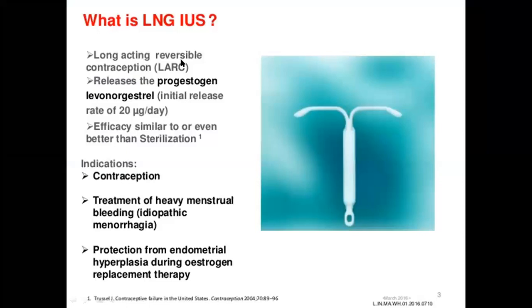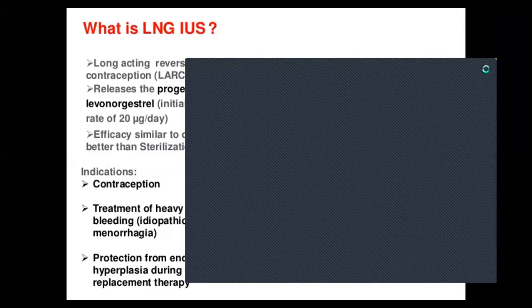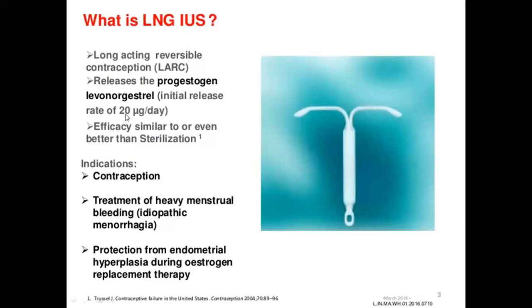Mirena is also known as LARC — long-acting reversible contraception. It releases levonorgestrel at a rate of 20 micrograms per day. Its efficiency as a contraceptive is similar to or even better than sterilization. The three indications for Mirena are: contraception, treatment of heavy menstrual bleeding, and protection against endometrial hyperplasia during estrogen therapy. The reduction in menstrual blood loss is between 70 to 96 percent, with control of bleeding seen after three to four months.